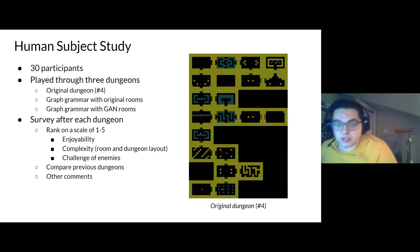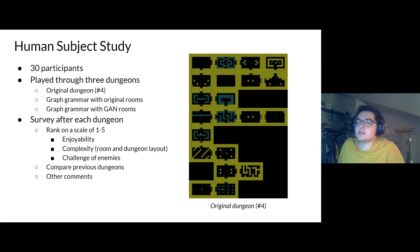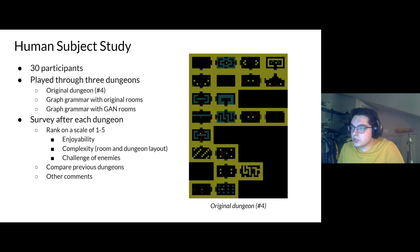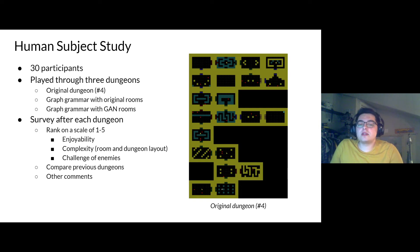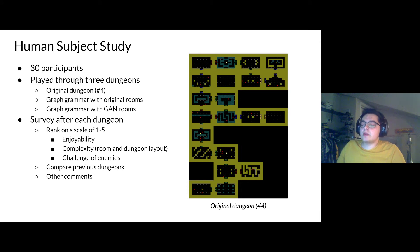We conducted a human subject study with 30 participants from Southwestern University — students, faculty, and staff — to determine whether our generated dungeons were comparable to the original. They played through three dungeons in random order: the original fourth dungeon, a graph grammar dungeon with original rooms replacing the nodes, and a graph grammar dungeon with GAN-generated rooms. After each dungeon, participants ranked it on a scale of one to five for enjoyability, complexity, and challenge, and also compared dungeons using the same categories and written comments.